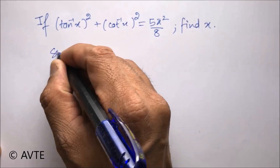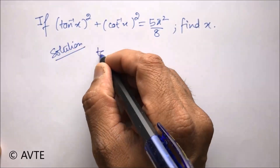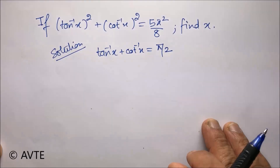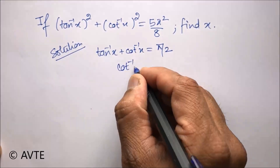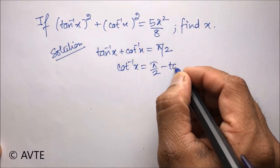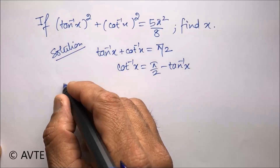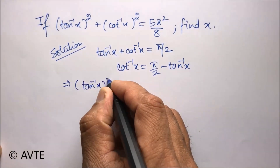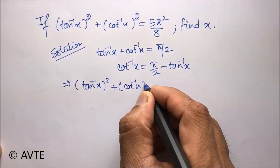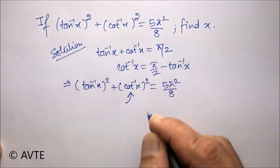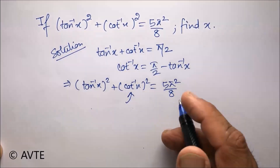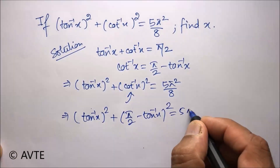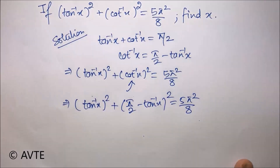We all know that tan inverse of x plus cot inverse of x is equal to pi by 2, and so cot inverse of x can be written as pi by 2 minus tan inverse of x. We are doing this because we want to convert the above expression into a quadratic form. So for cot inverse x, we write pi by 2 minus tan inverse of x.